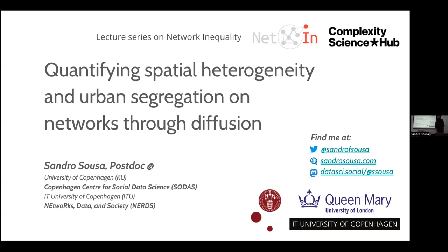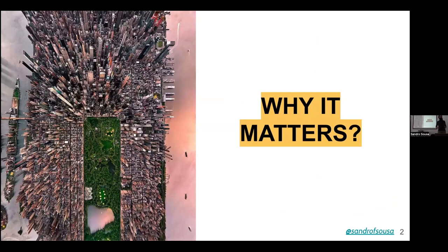The main idea today is to talk about how to quantify spatial heterogeneity, which is the way that people tend to be distributed in space. We use a diffusion process on cities to develop this kind of thing. But first, it's important to understand why this matters. Everyone here would agree that cities are fascinating — they are kind of the future of humanity because our population is shifting more and more towards urban spaces. We are becoming more and more forced to share these spaces and share resources. So the whole way cities are organized, especially spatially, shapes a lot how we interact and with whom we interact.